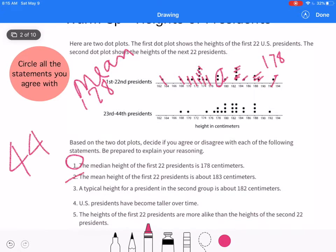The typical height for the president in the second group is about 182. Let's try finding the median. Yep, 182 is what I got. The presidents have become taller over time. I would say that the center has shifted about five units. So I would agree they have become taller.